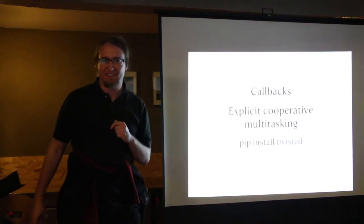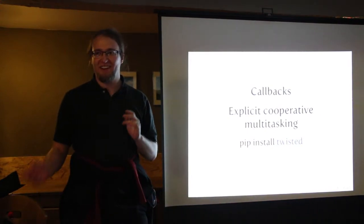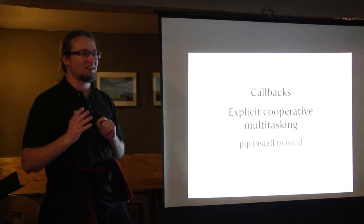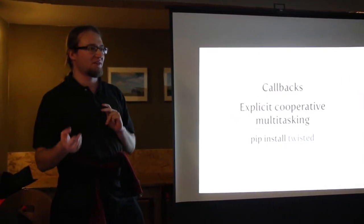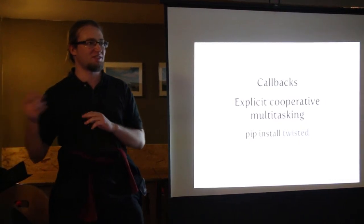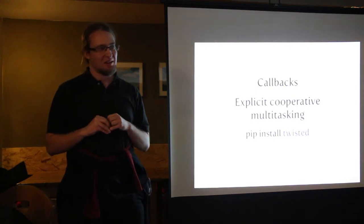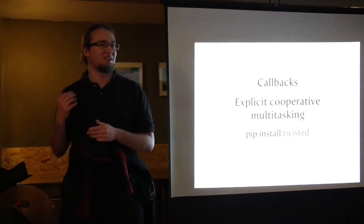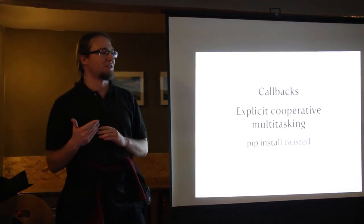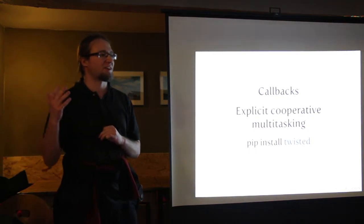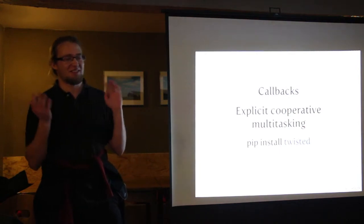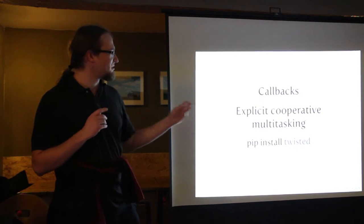We also have callbacks, which are very useful. You say: I'll now do a network request, and when that network request is done please call this function. You yield control to another thread or process, also run by an event loop, which gives control to individual threads when they have something to do. This is good because it's explicit — you don't have to monkey-patch the standard library, and you always know when you're yielding control. You can't be surprised that calling some function yields to another thread that then mutates your data.